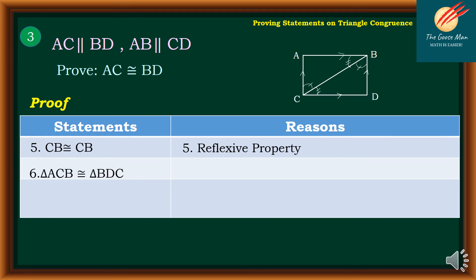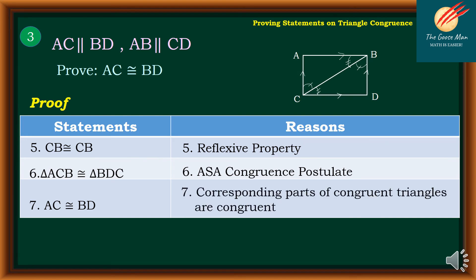Statement six: triangle ACB is congruent to triangle BDC — reason: ASA congruence postulate. Finally, statement seven: AC is congruent to BD — reason: corresponding parts of congruent triangles are congruent.